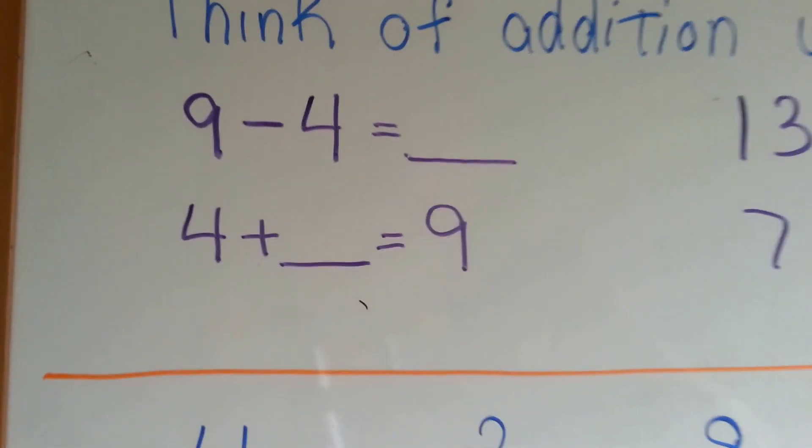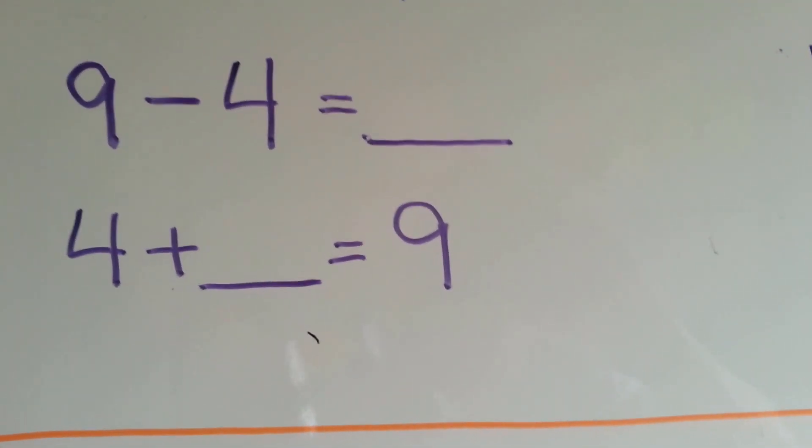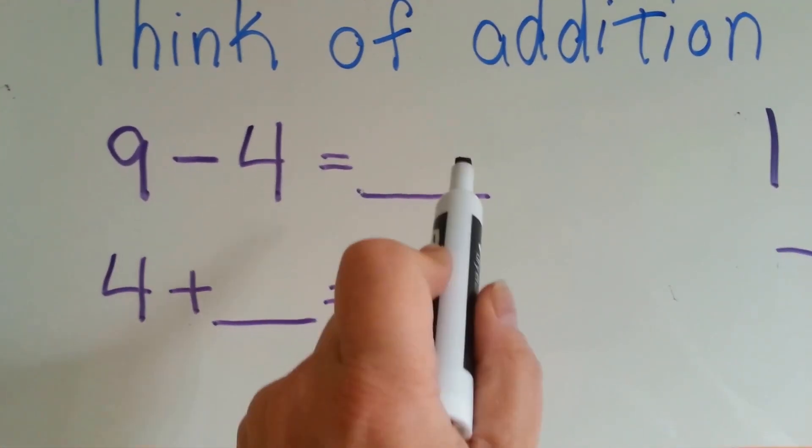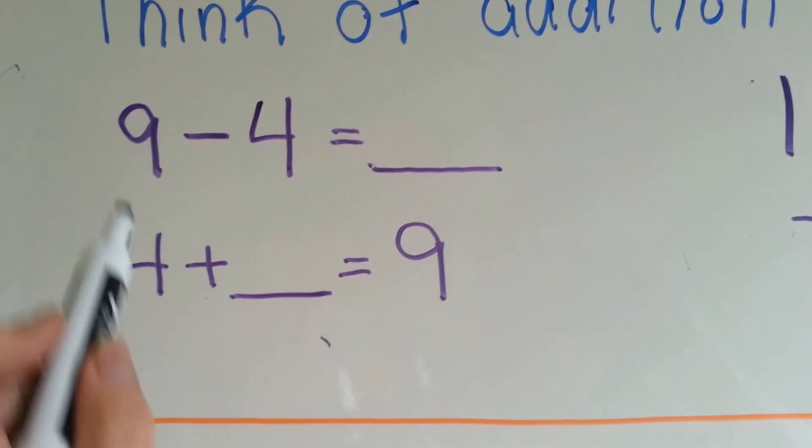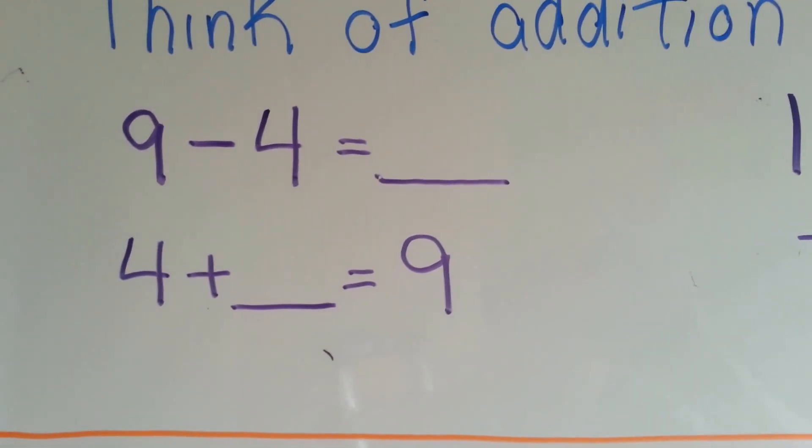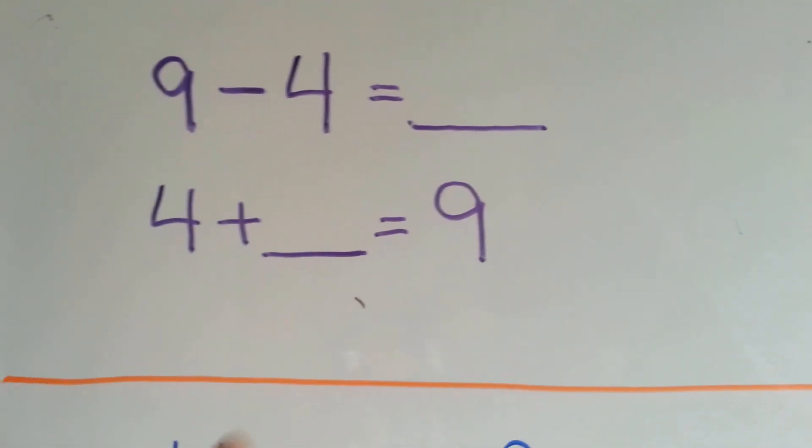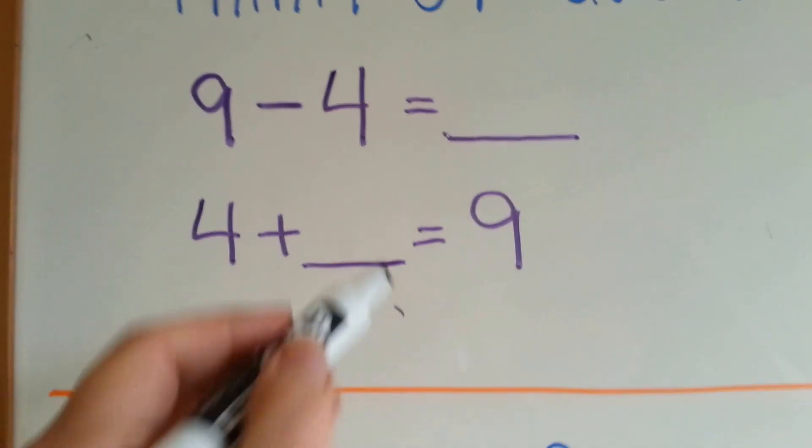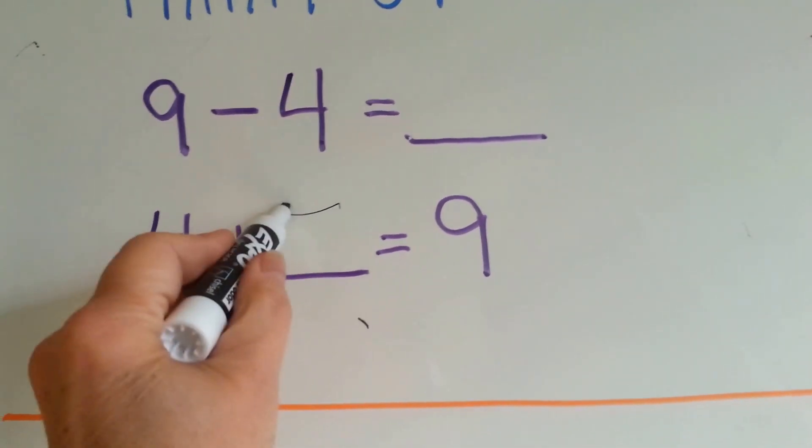Look at this first one: 9 take away 4. What does it equal? Well, if you think of 4 plus something equals 9, you might be able to do it easier. 4, 5, 6, 7, 8, 9. Five. 4 plus 5 equals 9.